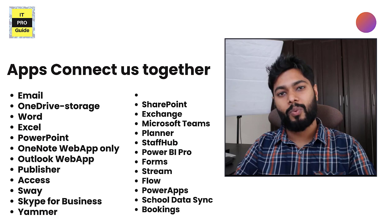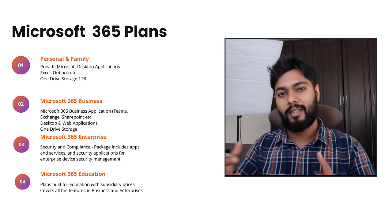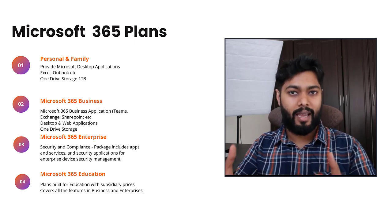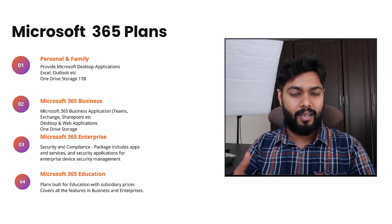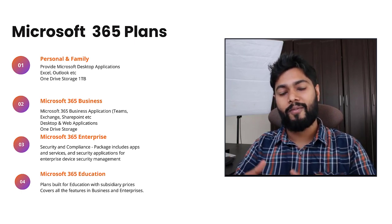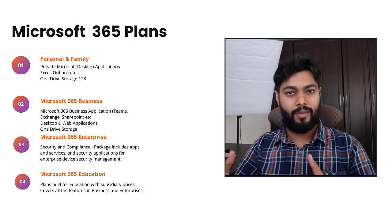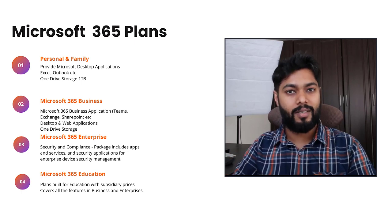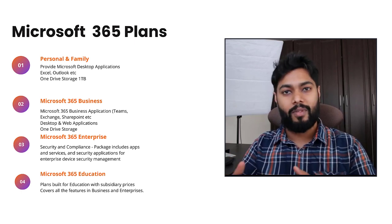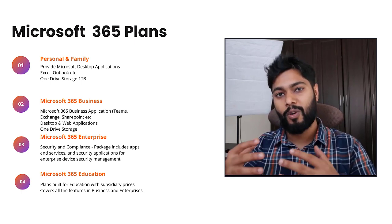That is why Microsoft offers different categories for their plans. The Personal category includes subscriptions covering desktop applications like Excel, Word, PowerPoint, and Outlook, along with OneDrive shared storage up to one terabyte for one person. This is a perfect option for someone who needs a Microsoft 365 subscription for personal or family needs.